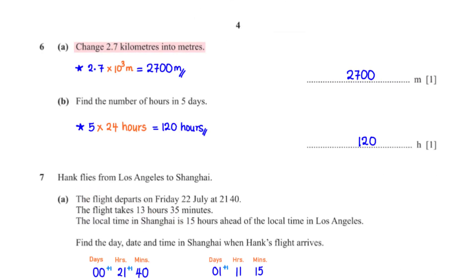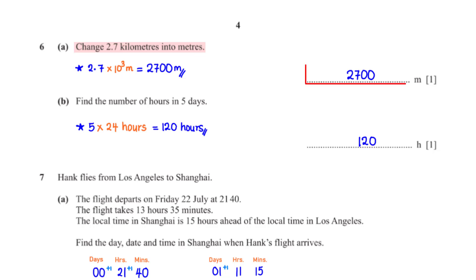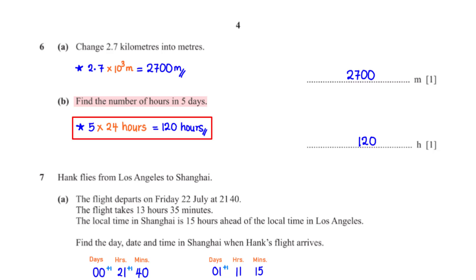Change 2.7 kilometers into meters. 1 kilometer is 1000 meters, so to convert 2.7 kilometers to meters, we multiply 2.7 by 1000. This gives us 2700 meters. Find the number of hours in five days. In one day there are 24 hours, so to convert five days to hours, we multiply 5 by 24. This gives us 120 hours.